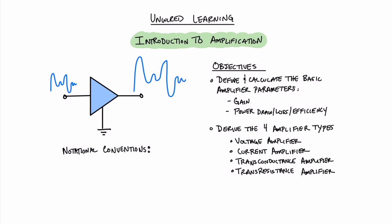We can see over here the basic symbol for a circuit amplifier. In this case we have some sort of signal coming in and a signal coming out that is a larger, more amplified version of the signal coming in. Because this is the case, we say that this amplifier causes gain in the signal, or it has signal gain.